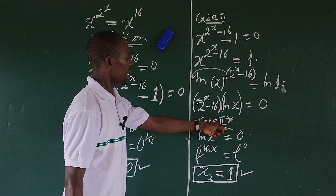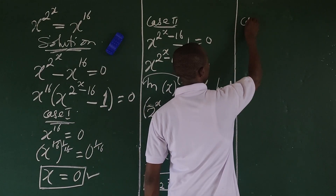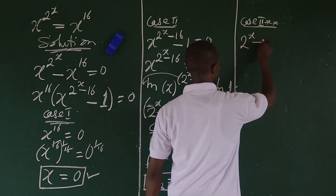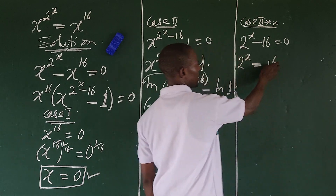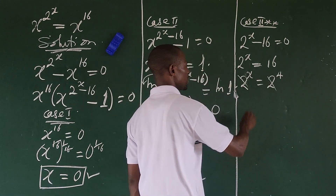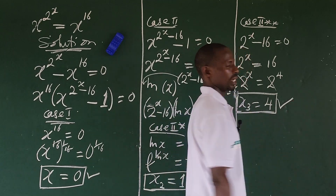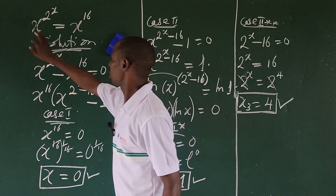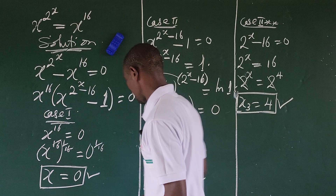For Case 2ii, we have 2 to the power of x minus 16 equals zero. Moving 16 to the other side gives 2 to the power of x equals 16. Since 16 equals 2 to the power of 4, we have 2^x equals 2^4, so x equals 4. This is the third root, x3 equals 4. Simply equating exponents from the start would not have revealed all three roots.